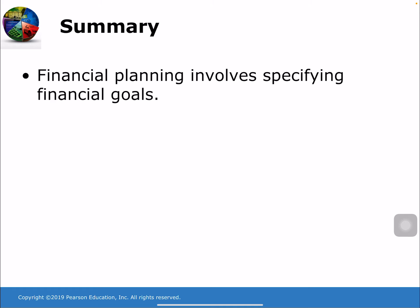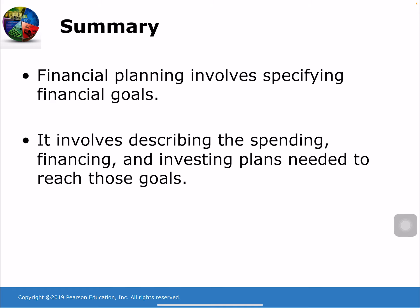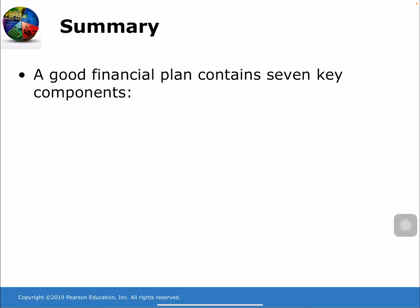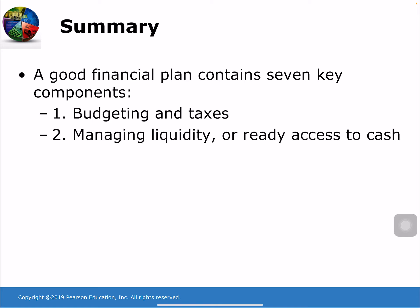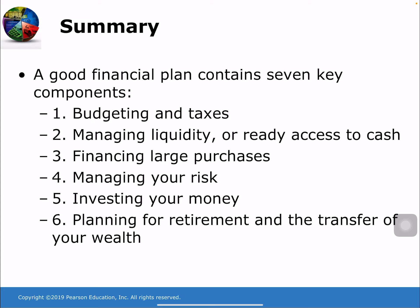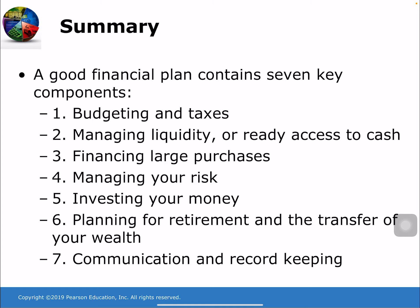In summary, financial planning involves specifying financial goals and describing the spending, financing, and investing plans needed to reach those goals. Your plan is like a blueprint for your financial future. A good financial plan contains seven key components: budgeting and taxes, managing liquidity, financing large purchases, managing risk through insurance, investing your money, planning for retirement and wealth transfer, and communicating and keeping good records.